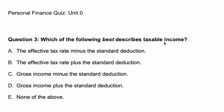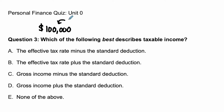So the idea is that when you work, you get paid. And when you get paid, let's say over the course of a year, you get paid $100,000. This is called your gross income.